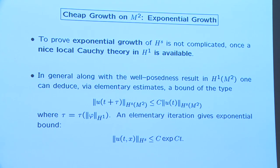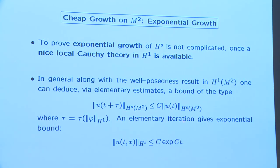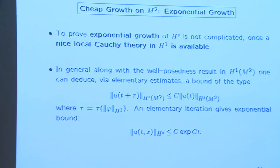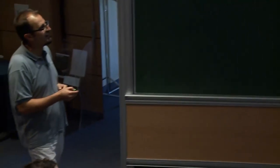Once you have a reasonable Cauchy theory in H^1 — thanks to the Staffilani–Tataru and Burq–Tzvetkov estimates — for free you get an exponential upper bound on the H^s norm. By a Tame estimate, the H^s norm after an increment tau depending only on the size of initial data satisfies a multiplicative bound; iterating this gives exponential growth. This is better than the double-exponential by Brezis–Gallouët, and it is an upper bound: the growth is at most exponential.